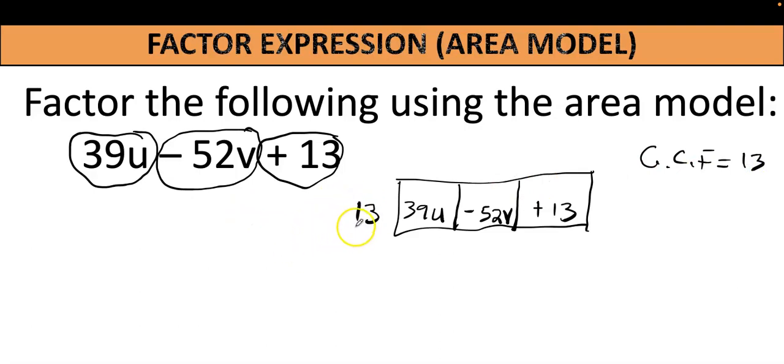All right, then we ask ourselves what times 13 gives me 39u. That looks like 3u. What times 13 gives me negative 52v? That looks like negative 4v. And what times 13 gives me 13? That looks like positive 1.